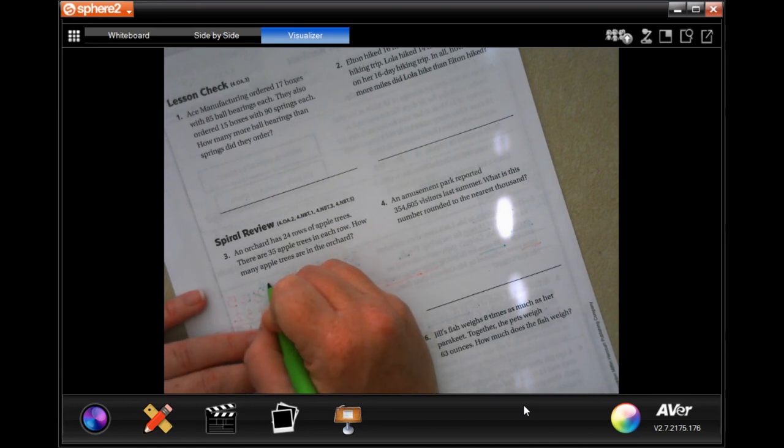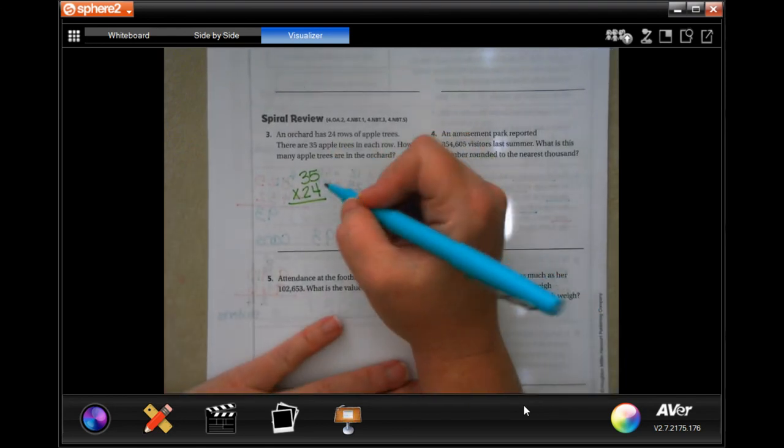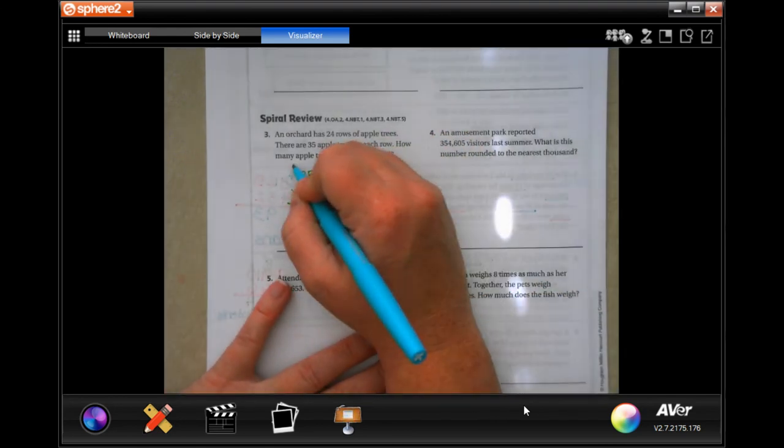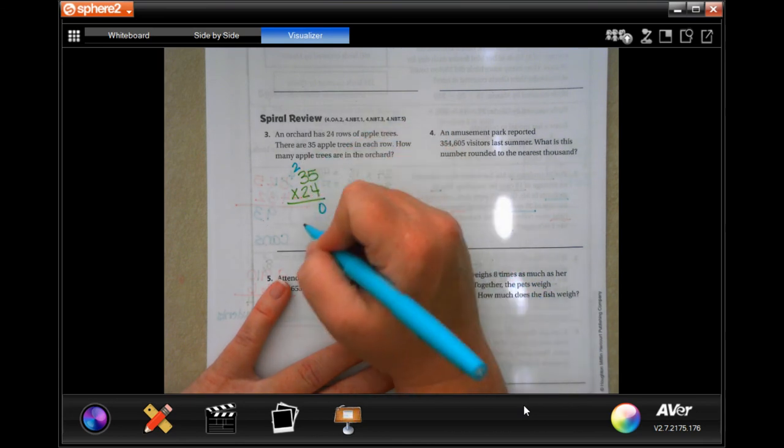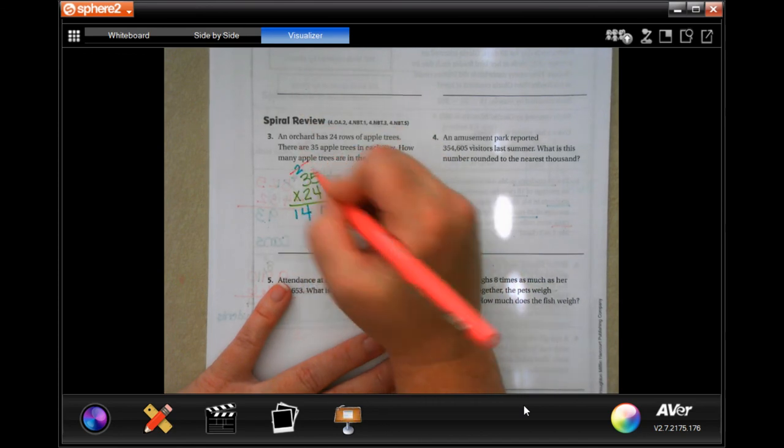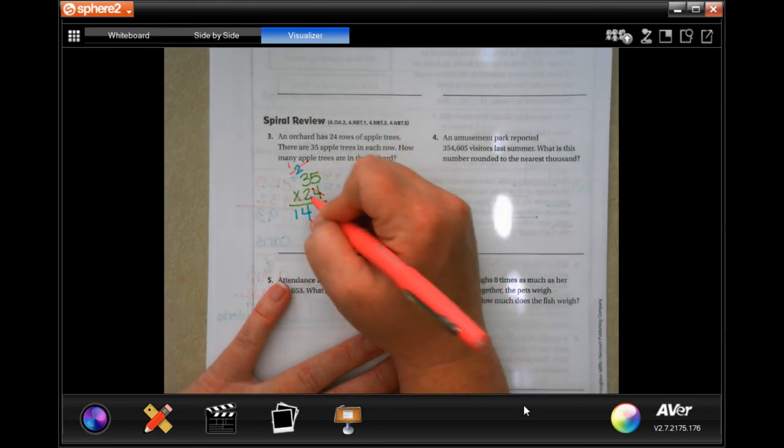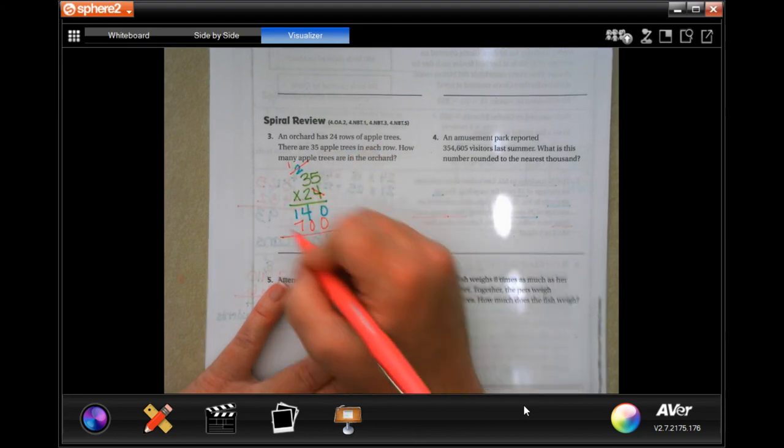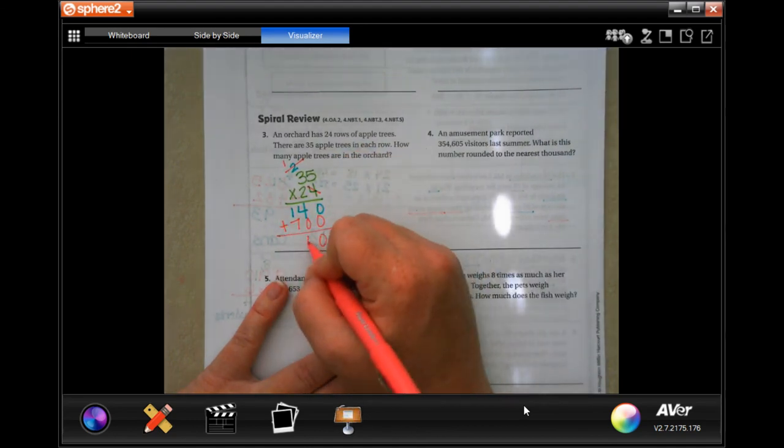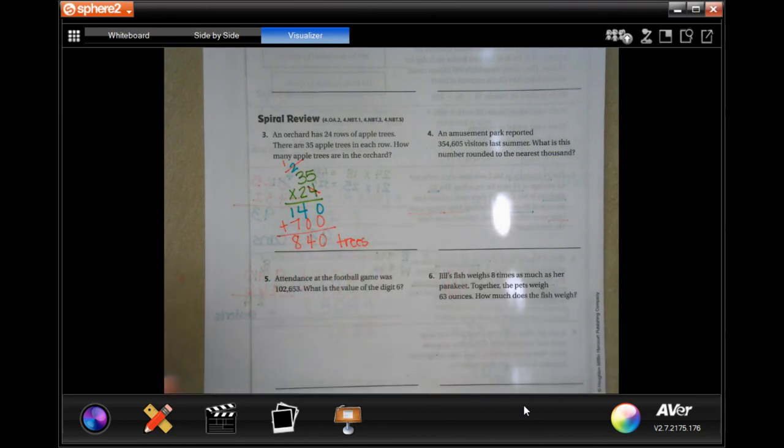Well, I'm going to put the bigger number up top, and I'm going to multiply it. So 4 times 5 is 20. Carry the 2. 4 times 3 is 12, plus 2 more is 14. Pick, tack, toe. 2 times 5 is 10. Carry the 1. 2 times 3 is 6, plus 1 more is 7. Add them up. 0, 4, 8. 840 apple trees. You could just write trees.